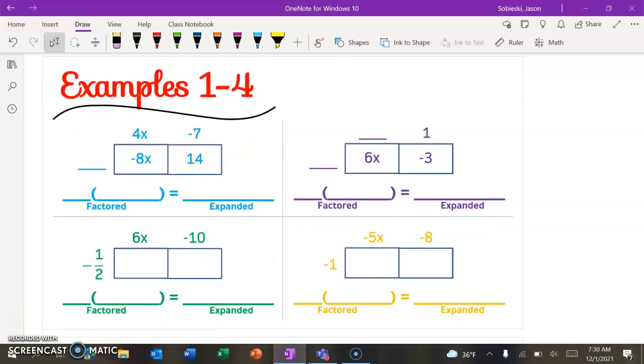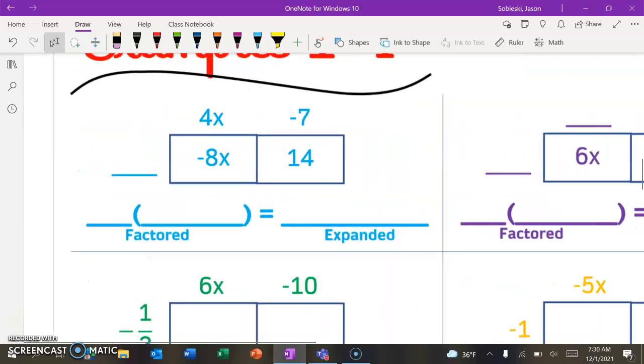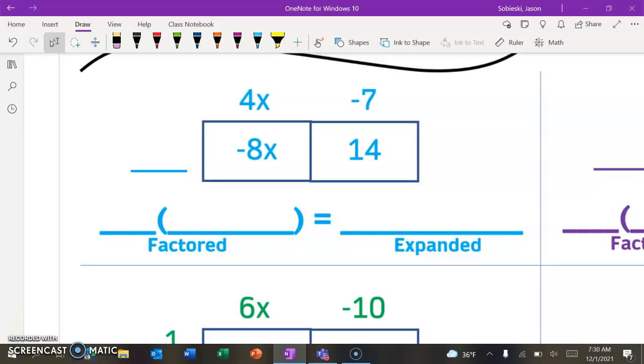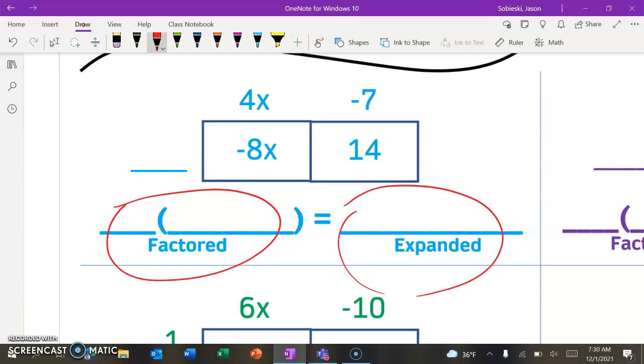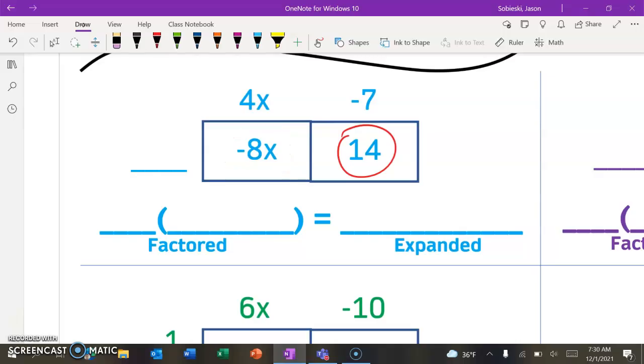All right, so let's take a look. Let's jump right in with a first example. So we're going to start with the blue example. We are using our rectangle method. We are trying to get both forms, the factored form and the expanded form. We said expanded form is whatever is inside the rectangle, and that looks like this is done. So let's write it out. We know the expanded form is negative 8x plus, because it's a positive 14, so plus 14.